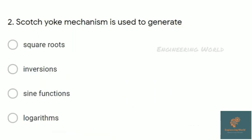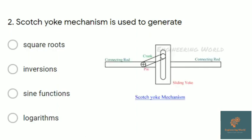Second question: Scotch yoke mechanism is used to generate? I will show the simple geometry of Scotch yoke mechanism. Due to rotation of this circular pin, this connecting rod does simple harmonic motion.